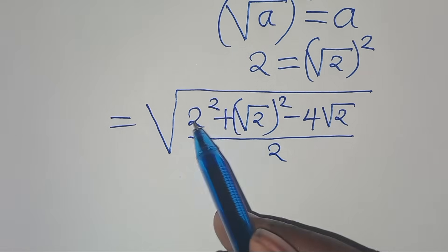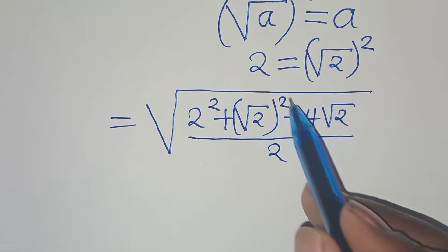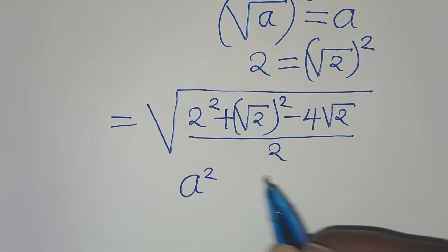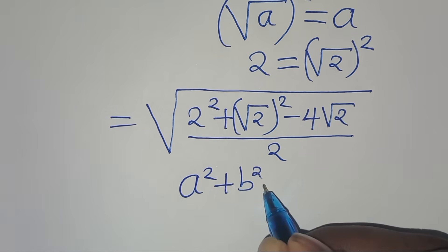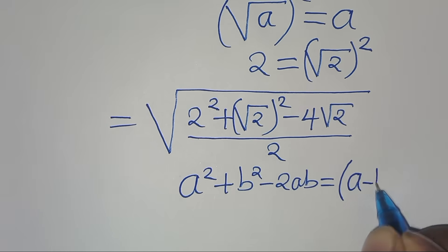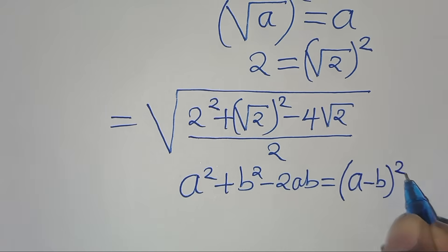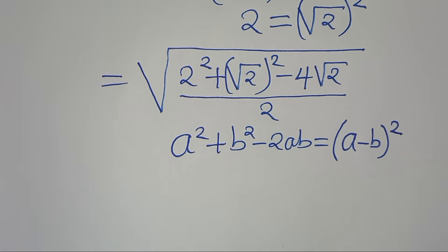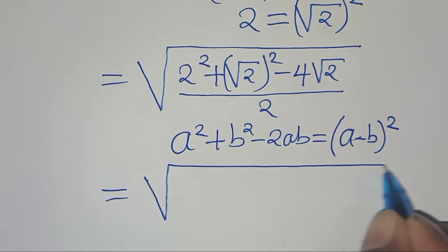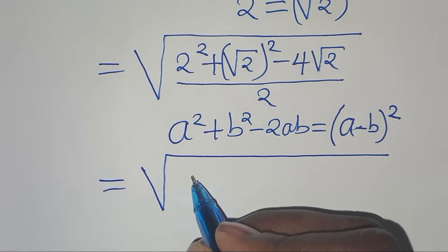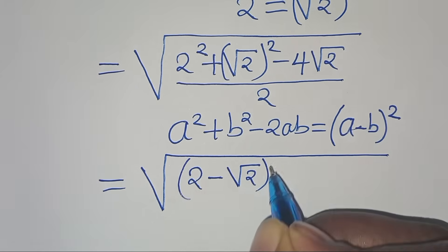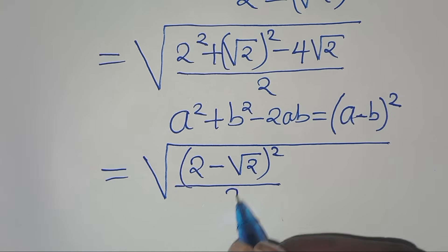The next step is that (√2)² plus square root of 2 minus 4 square root of 2 — this is in the form of a squared plus b squared minus 2ab, which we can express as the square root of (a minus b) raised to the power of 2. Applying this algebraic identity, we have the square root of (2 minus square root of 2) raised to the power of 2, everything divided by 2.